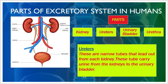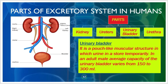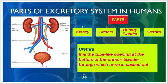Ureters are narrow tubes that lead out from each kidney, carrying urine from the kidneys to the urinary bladder. The urinary bladder is a pouch-like muscular structure in which urine is stored temporarily. In an adult male, the average capacity of the urinary bladder varies from 150 to 300 ml. The urethra is a tube-like opening at the bottom of the urinary bladder through which urine is passed out.